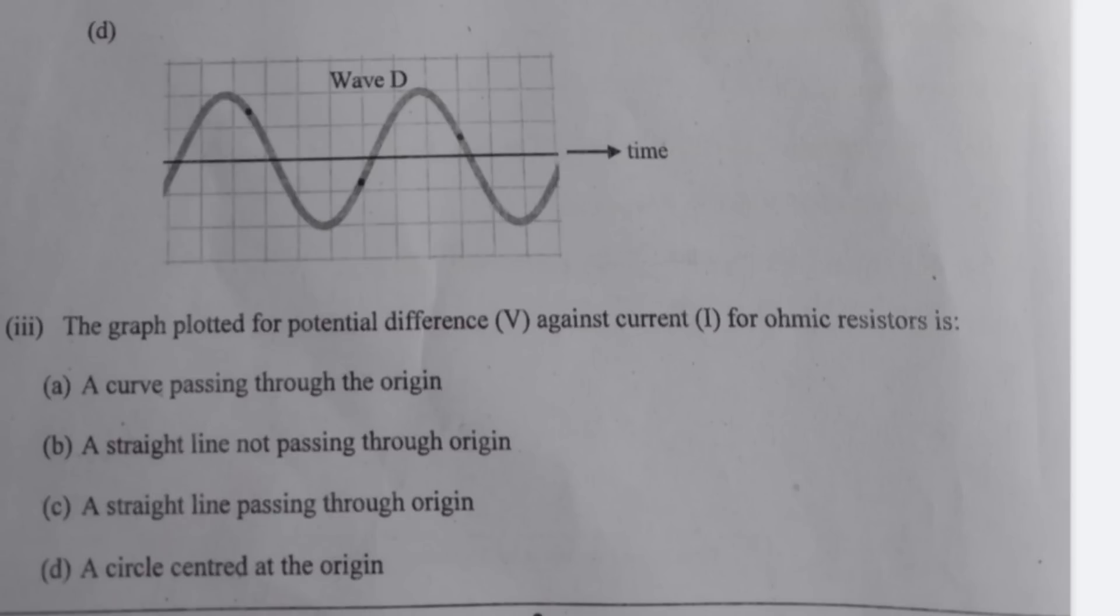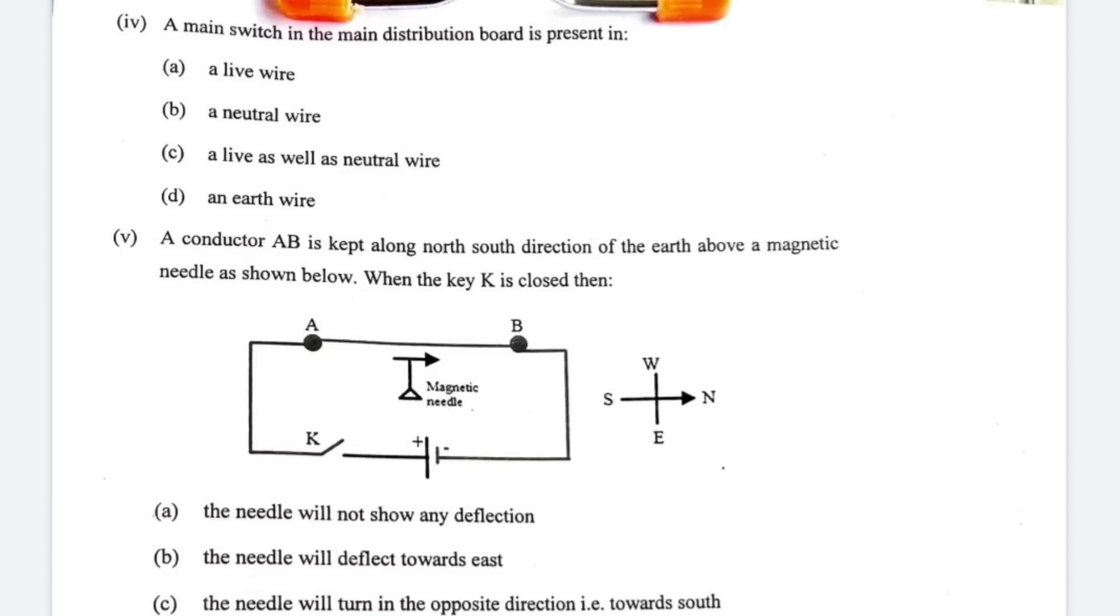Question number four: a main switch in the main distribution board is present in a live wire, a neutral wire, a live as well as neutral wire or D an earth wire. The correct option is C and here the chances of a mistake are high because students may mark A if they do not know about the double pole switch.